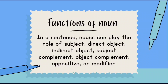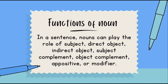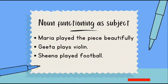Now we go to the most important section: functions of noun. In a sentence, nouns can play the role of subject, direct object, indirect object, subject complement, object complement, appositive, or modifier. This part is very important — nouns have so many roles: sometimes they are subject, sometimes they are direct or indirect object, then complement or modifier.